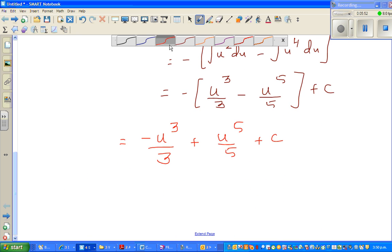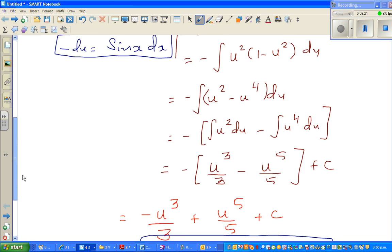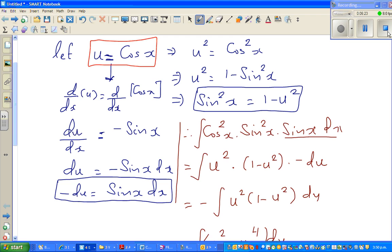So let me use a different color. So this is nothing but minus cos cubed x over 3 plus cos to the power 5 x over 5 plus c. Just like that. And this is your final answer. I'll do a few more examples of substitution or substitution method in the next few videos. See you in the next video.